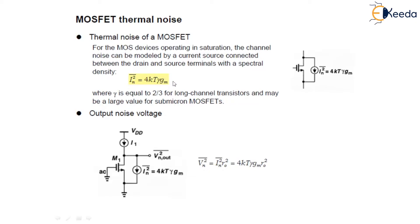This is very important. While analyzing this MOSFET, we will always consider that the noise is given by 4kTγgm. And γ is equal to 2/3 for long channel transistors, where we can substitute the value of γ.